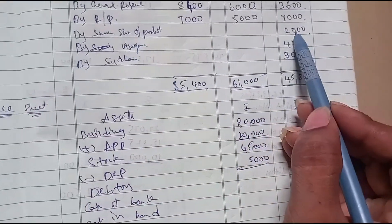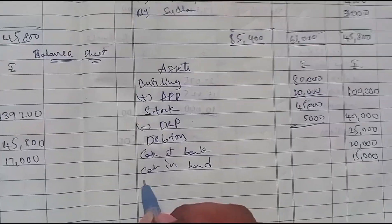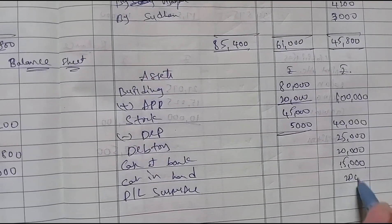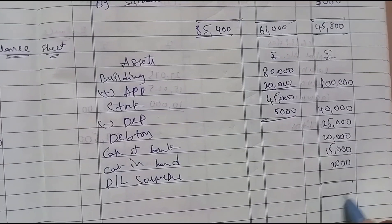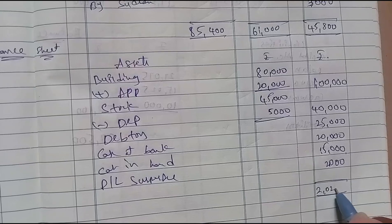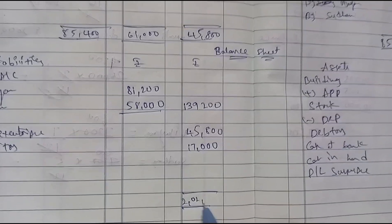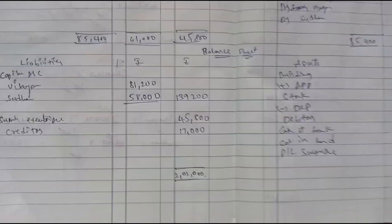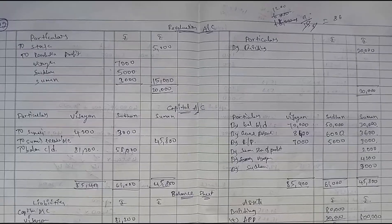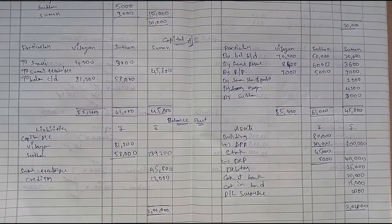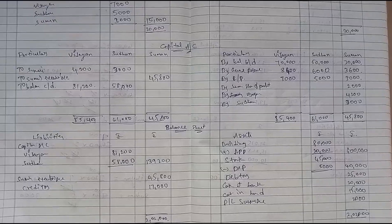Profit or loss suspense account is 2,000. So, in summary, this problem covers the Revaluation Account, Capital Account, and Balance Sheet — one important question from Chapter 6. Okay, thank you.